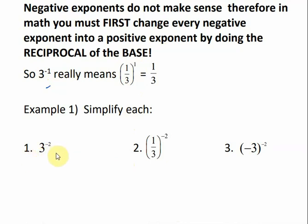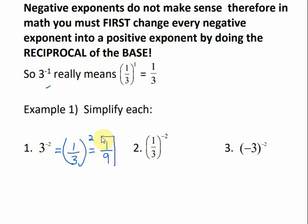If I have 3 to the negative 2 power, I can flip or take the reciprocal of my base, and that's 1 third squared. Then I can simplify that — if I square each part, 1 squared is 1 and 3 squared is 9, giving me 1 ninth. Now if I have 1 third to the negative 2 power, I flip my base: flipping 1 third gives me 3, so that would be 3 squared, which is 9.